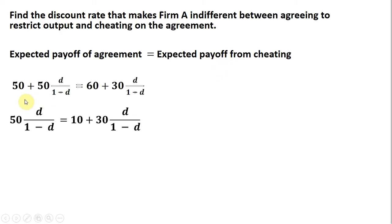So we'll set both of those equations equal to one another. Here we found the expected payoff of agreeing to restrict output equals this on the left-hand side, and we just found the expected payoff from cheating is represented by this mess on the right-hand side.